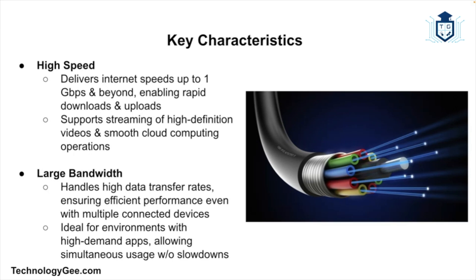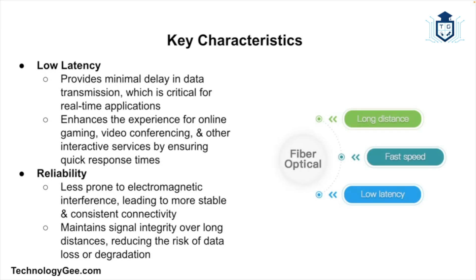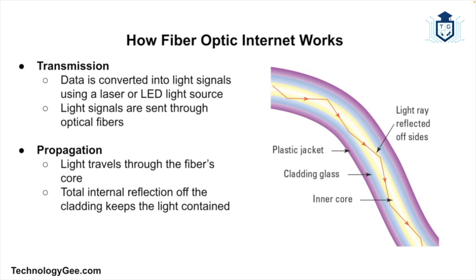Here are some key characteristics of fiber optic internet. First is high speed — it is capable of delivering internet speeds up to one gigabit per second and beyond. It has larger bandwidth, which allows it to support higher data transfer rates accommodating multiple devices and high-demand applications simultaneously. It offers lower latency, providing minimal delay in data transmission, which is crucial for real-time applications like gaming and video conferencing. It is also reliable, being less susceptible to electromagnetic interference and signal degradation over long distances.